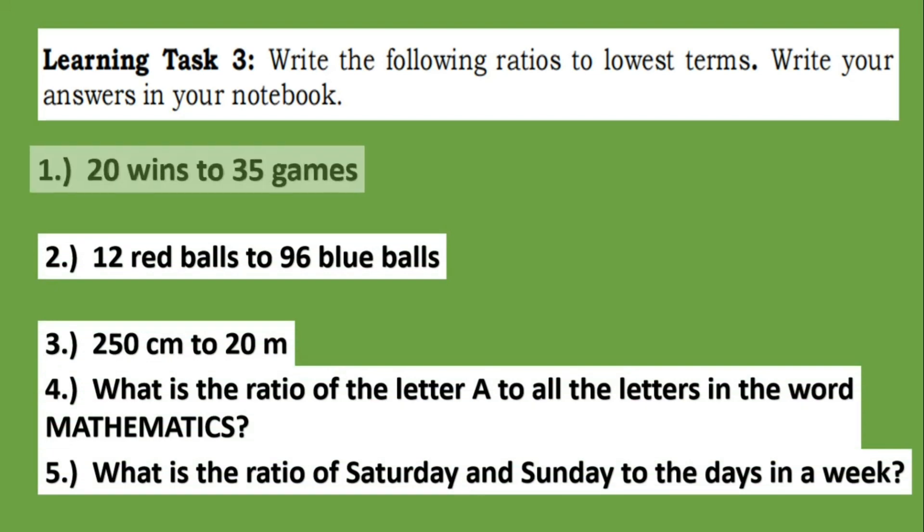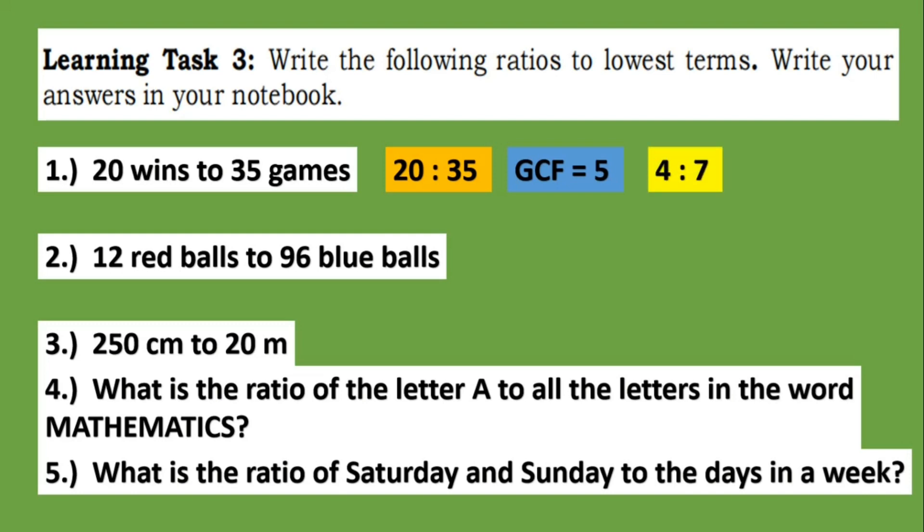So for number one, we have twenty wins to thirty-five games. So that is 20:35. The greatest common factor or GCF is five. So twenty divided by five equals four, and thirty-five divided by five is seven. So the lowest term would be 4:7.